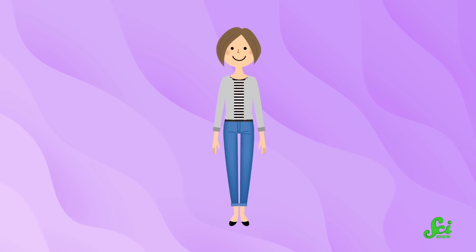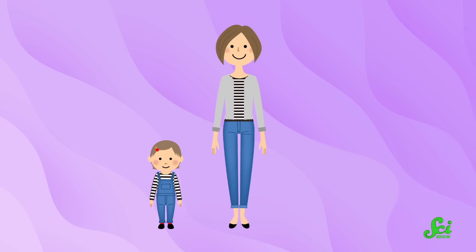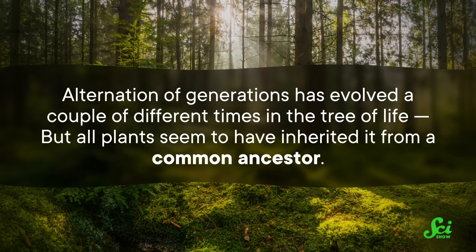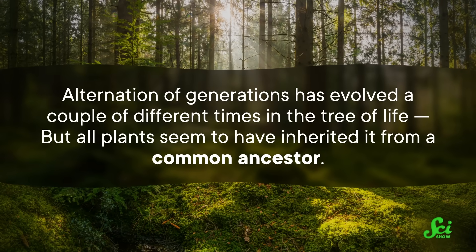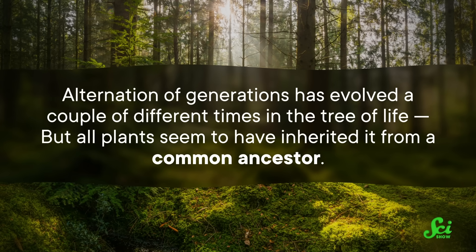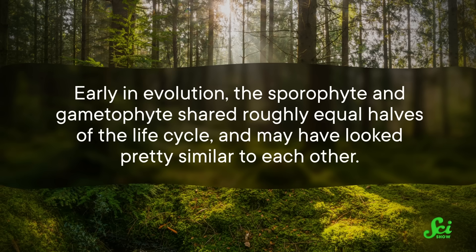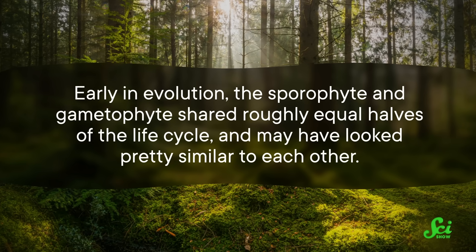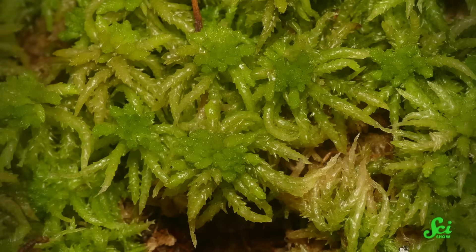Imagine that in people. Instead of producing sperm or eggs, a diploid person would just kind of spontaneously, asexually produce haploid kids all by themselves. But then those kids would do things the normal way. How could this ever evolve? It's actually not unique to plants — alternation of generations has evolved a couple of different times in the tree of life. But all plants seem to have inherited it from a common ancestor. Early in evolution, the sporophyte and gametophyte shared roughly equal halves of the life cycle and may have looked pretty similar to each other. In extant plants, however, one of the two forms is dominant over the other.